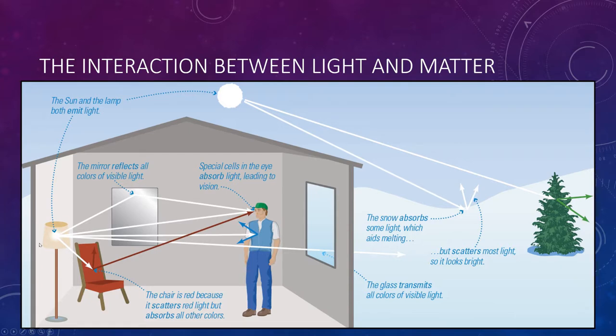So you have white light being emitted from this lamp. Some of it might go straight through the window where it's transmitted. But some of the light might reflect off of a mirror or it could be scattered off of an object. The chair looks red in this case because it is scattering red light but absorbing the others. So you see it as red, even though white light, that is all colors together, hit it. Snow can absorb some light, which is why it helps to melt it, but it can scatter most of it. And if it hits a tree, the tree appears green because it is scattering green light but absorbing everything else.